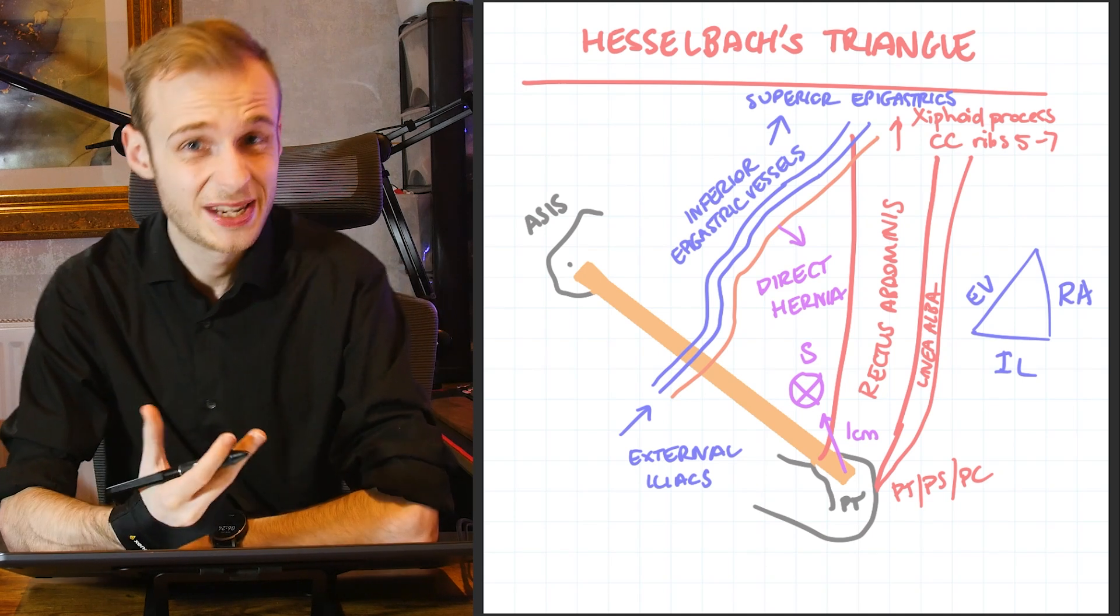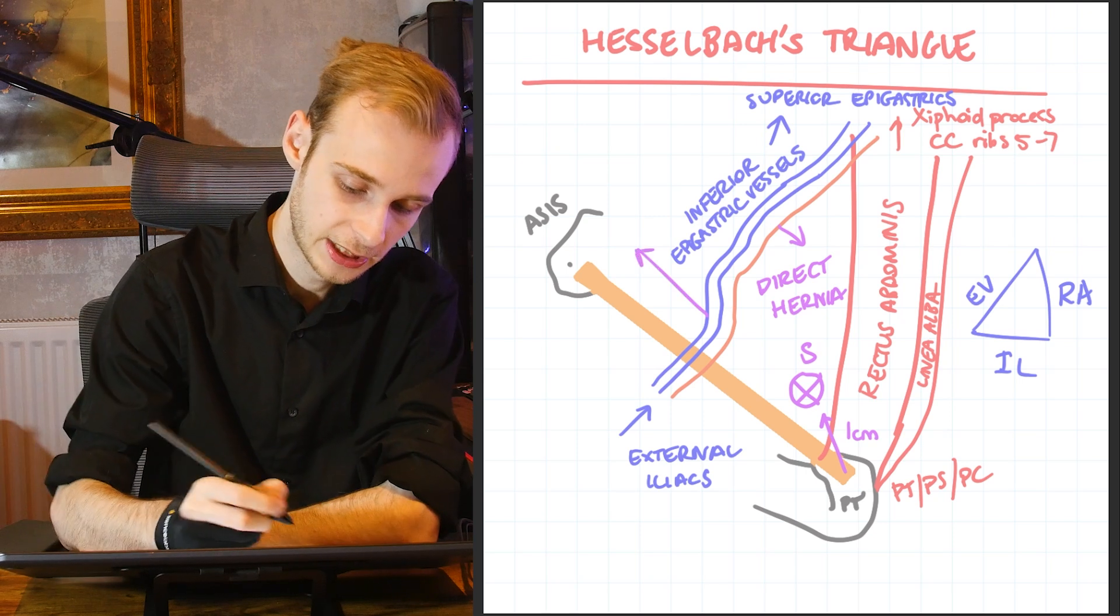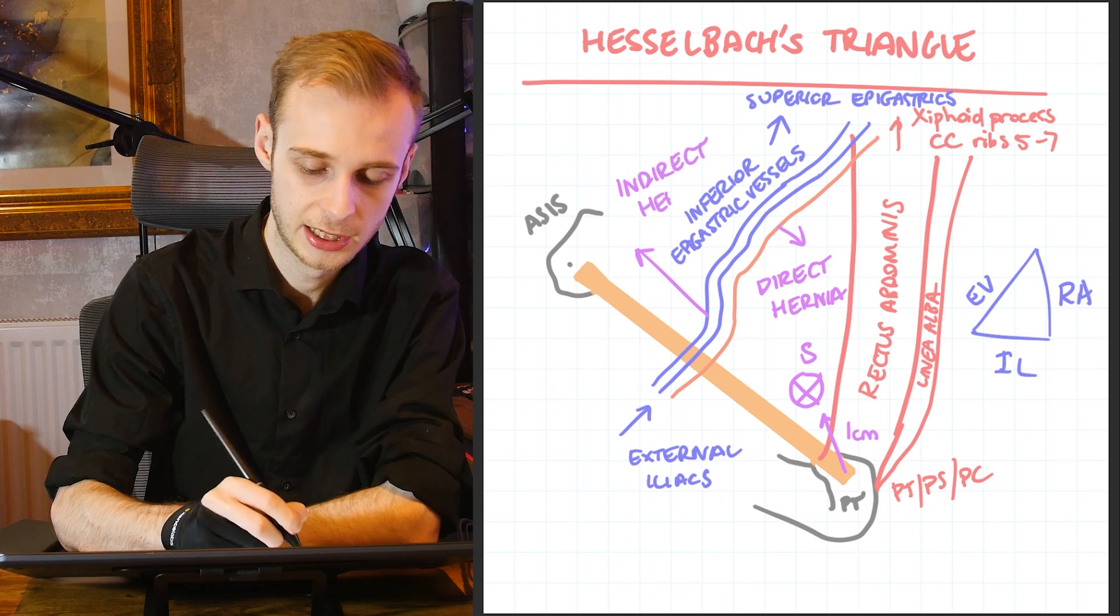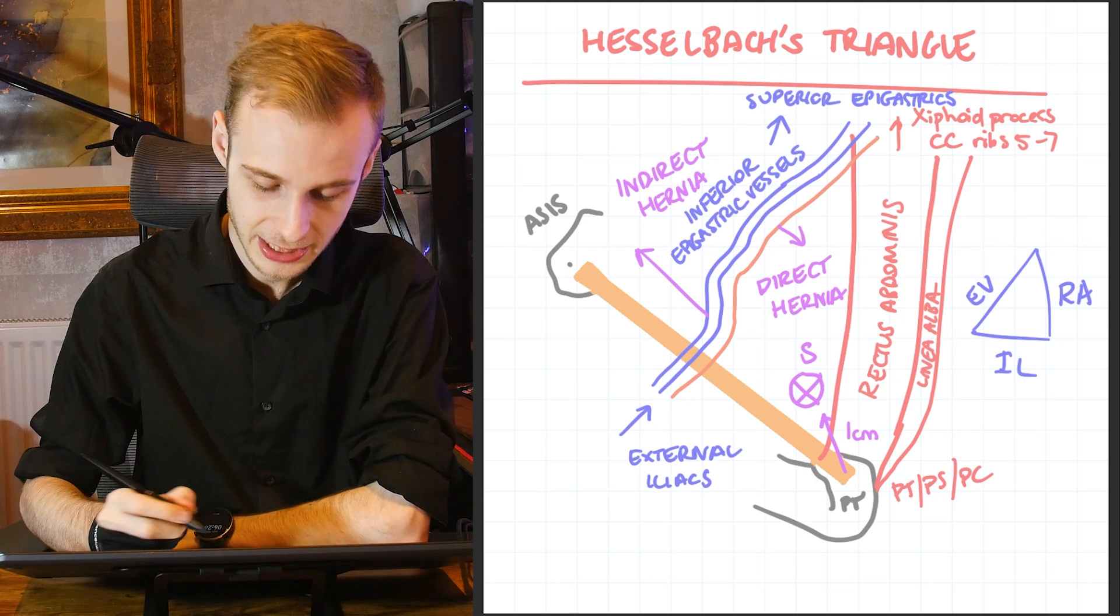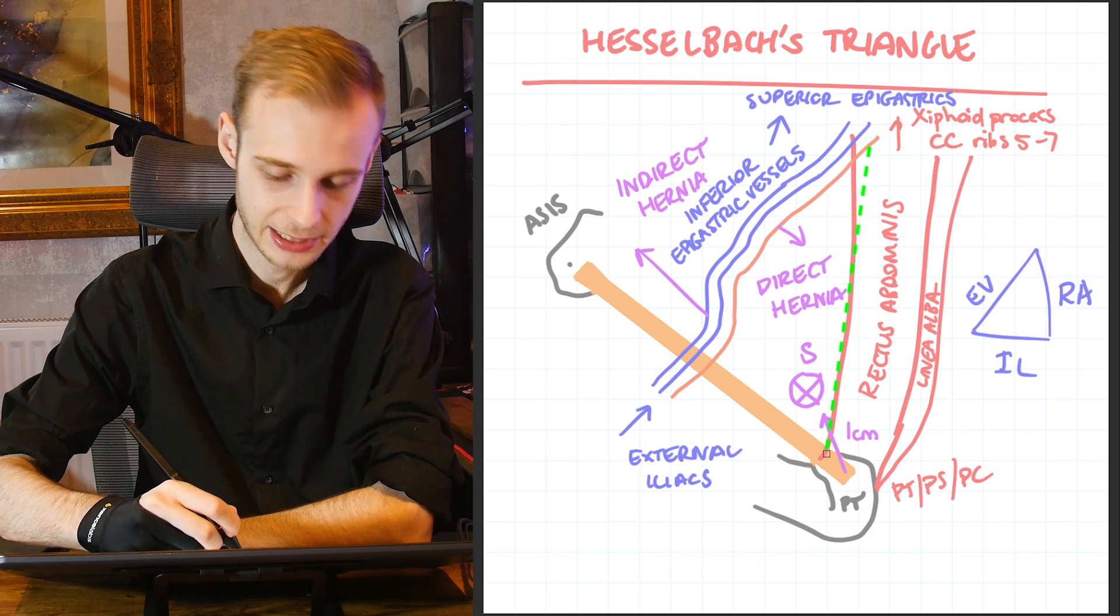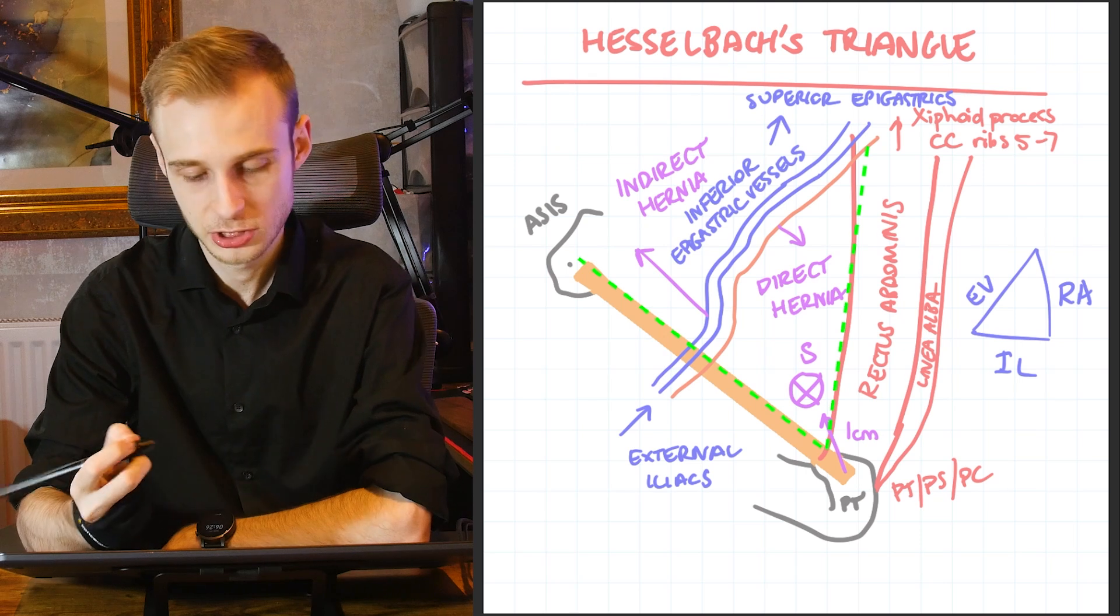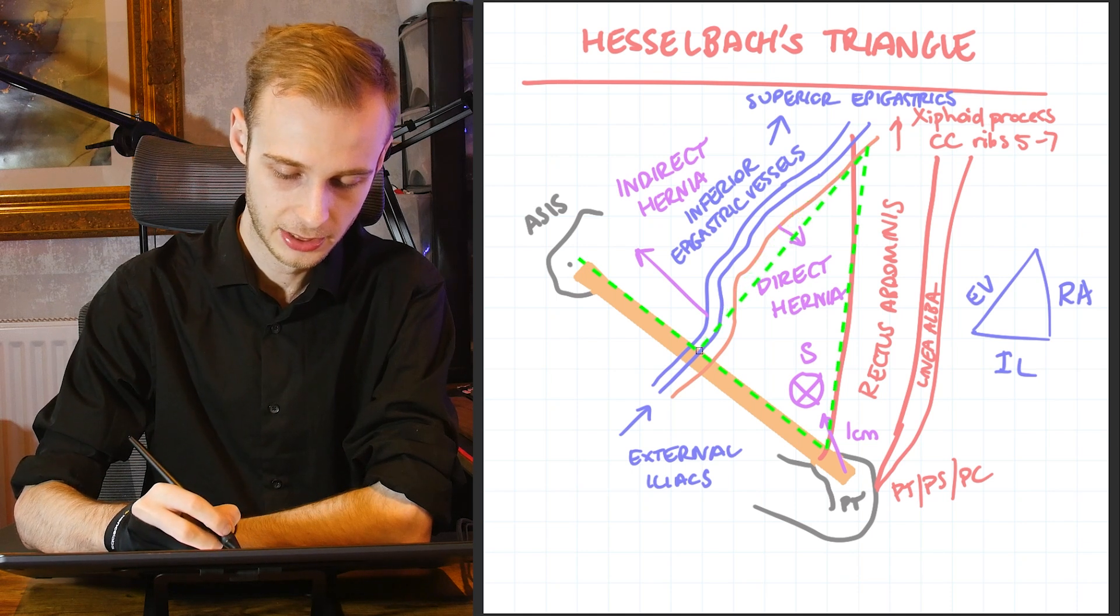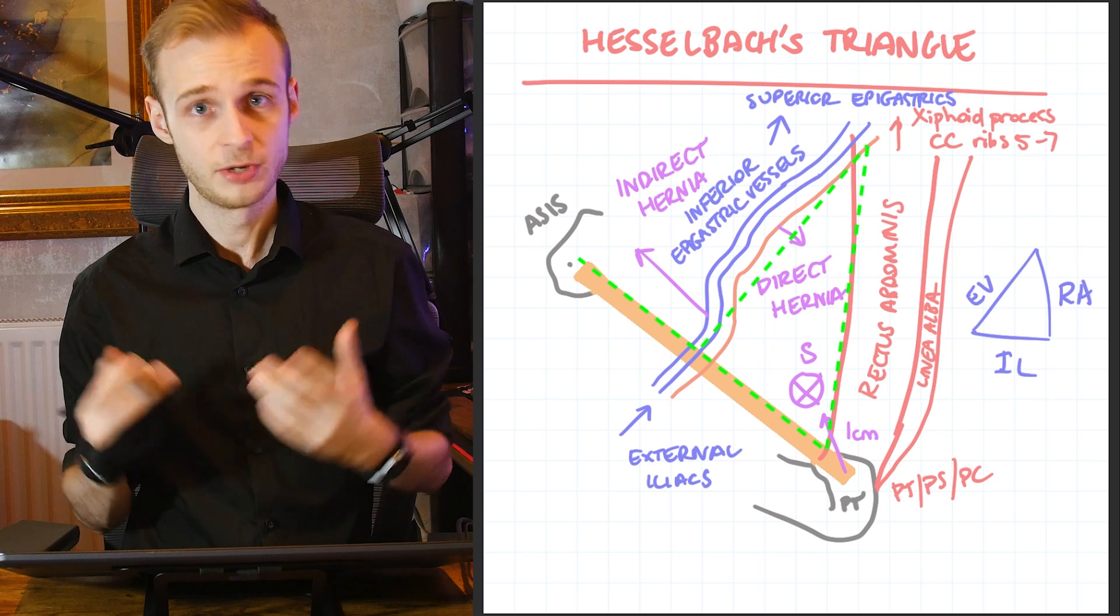Direct hernias make up about 20 percent, they're the less common variety of inguinal hernias. If, however, your inguinal hernia were to arise laterally to the inferior epigastric vessels, then you have an indirect inguinal hernia, and this accounts for about 80 percent of cases. So that is Hesselbach's triangle, guys. Just to recap: we have our three borders. The medial border is the lateral border of rectus abdominis, the inferior border is our inguinal ligament going between the pubic tubercle and the anterior superior iliac spine, and then our lateral border of the triangle is the course of the inferior epigastric vessels.